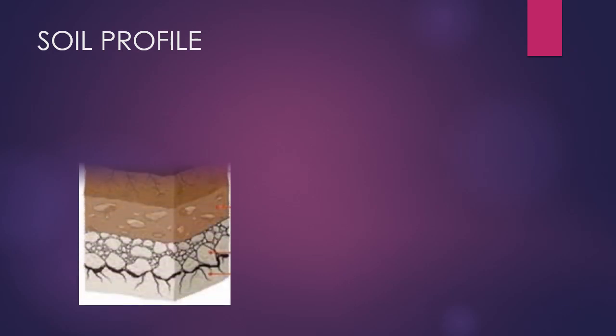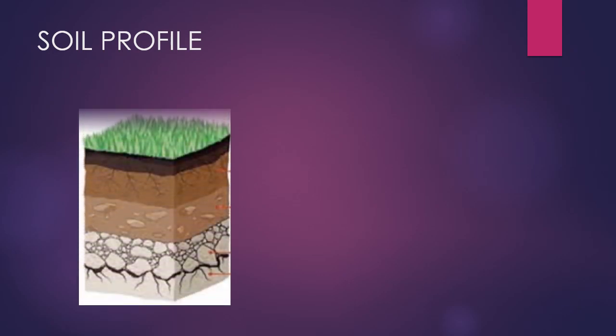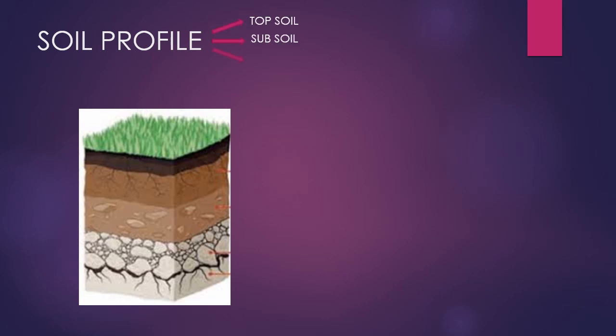The soil is found in layers which are arranged during the formation of soil. These layers are called horizons. The sequence of layers or horizons is the soil profile. The main layers of soil are topsoil, subsoil and bedrock.